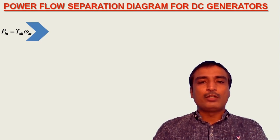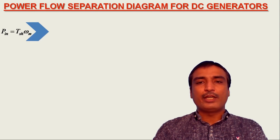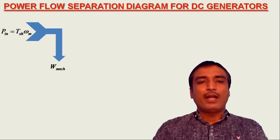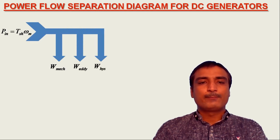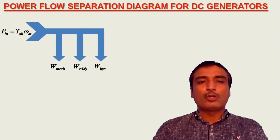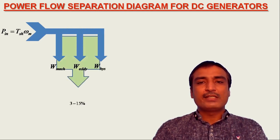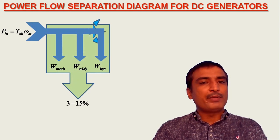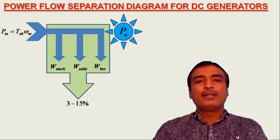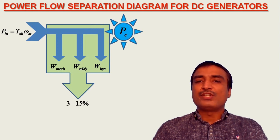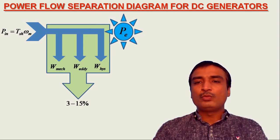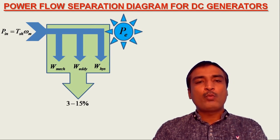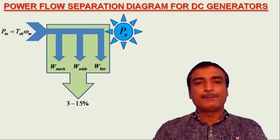These rotational losses occurring in the DC generator include mechanical losses, eddy current loss and hysteresis loss. Now, after subtracting these rotational losses from the mechanical input power, what remains is represented as the net mechanical power, which is then converted to electrical power by electromechanical energy conversion.